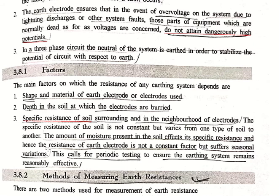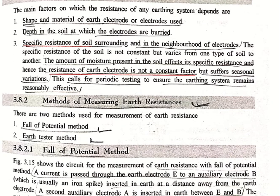Therefore the resistance of the earth electrode is not a constant factor but suffers seasonal variation. This calls for periodic testing to ensure the earthing system remains reasonably effective. The third factor is very important because our earthing system depends on seasonal factors, moisture, resistance of soil, and type of soil — so we must check it periodically to ensure our earthing system is working.